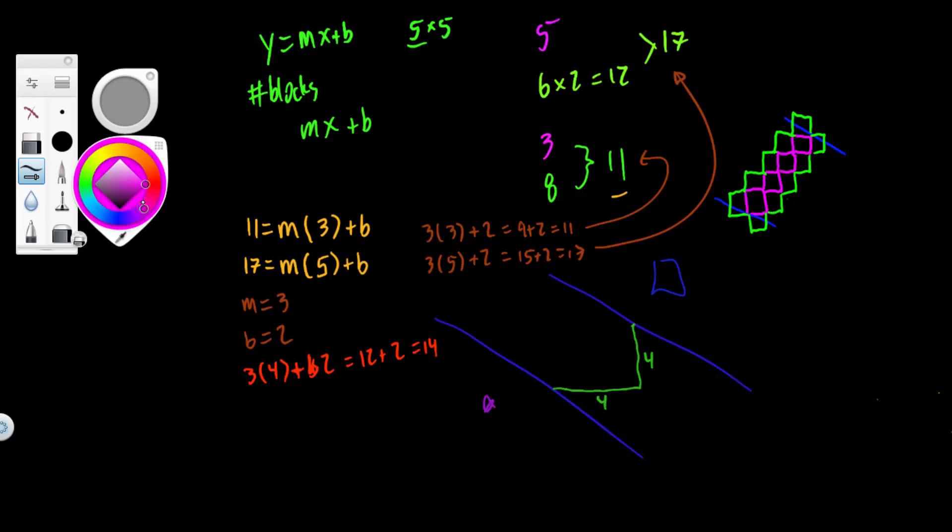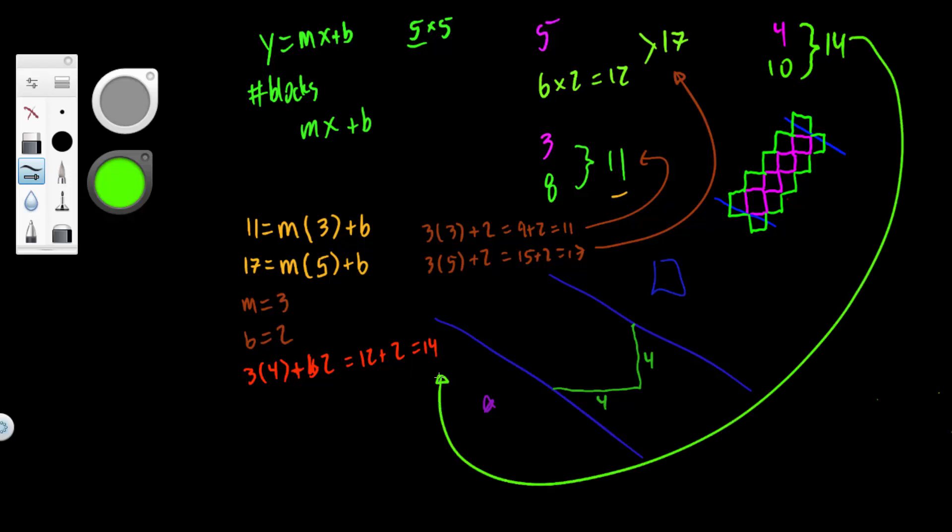Here we go. So we've got 4 purple, we already know that. And then 1, 2, 3, 4, 5. So that's, oh, we got it. Because if there's 5 and then 5, that's 10. And that, my friends, is going to get us 14. Look at that. How cool is that? Don't you feel smarter today? I sure do.